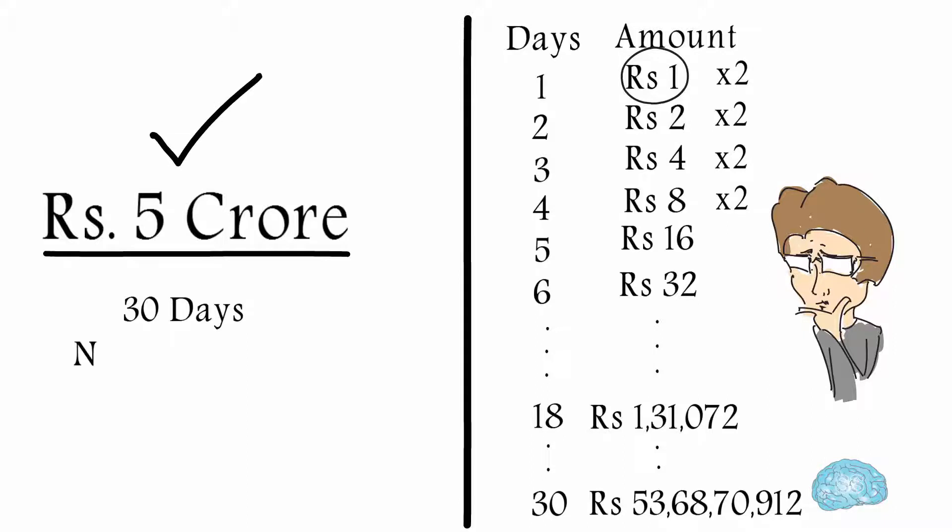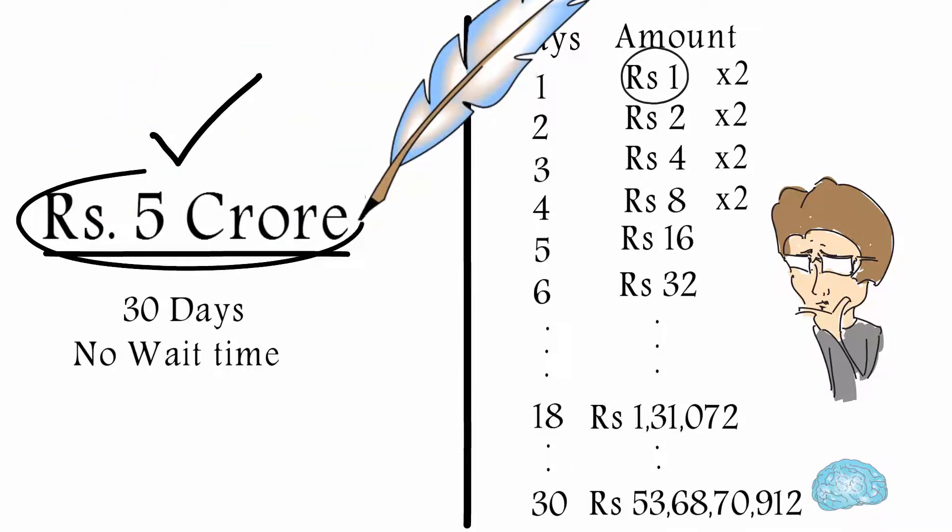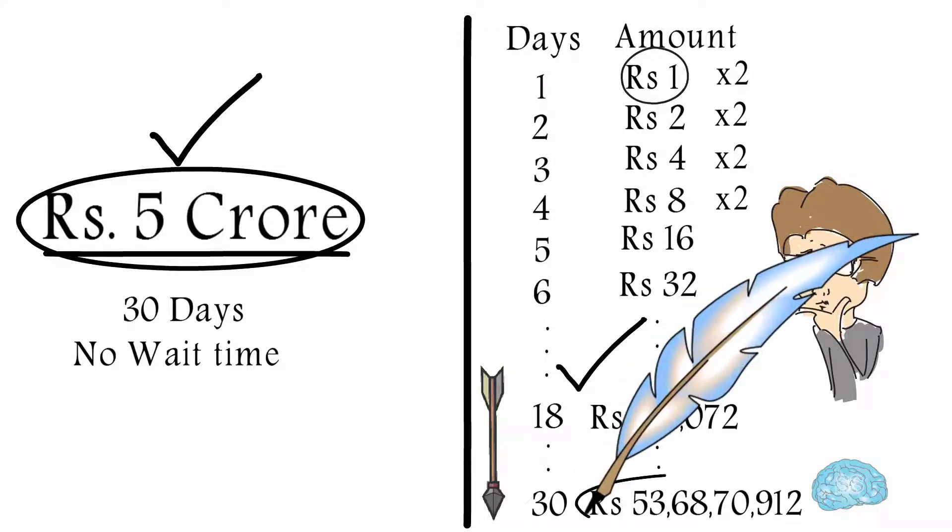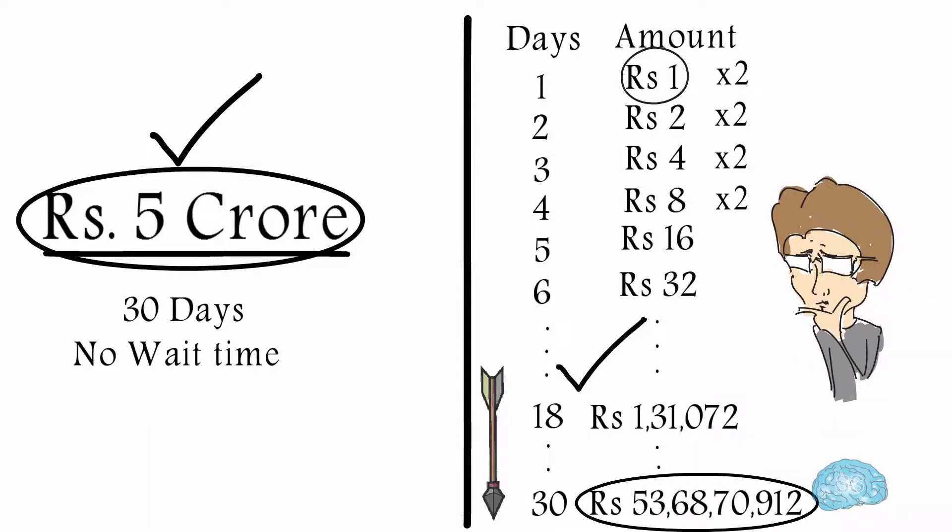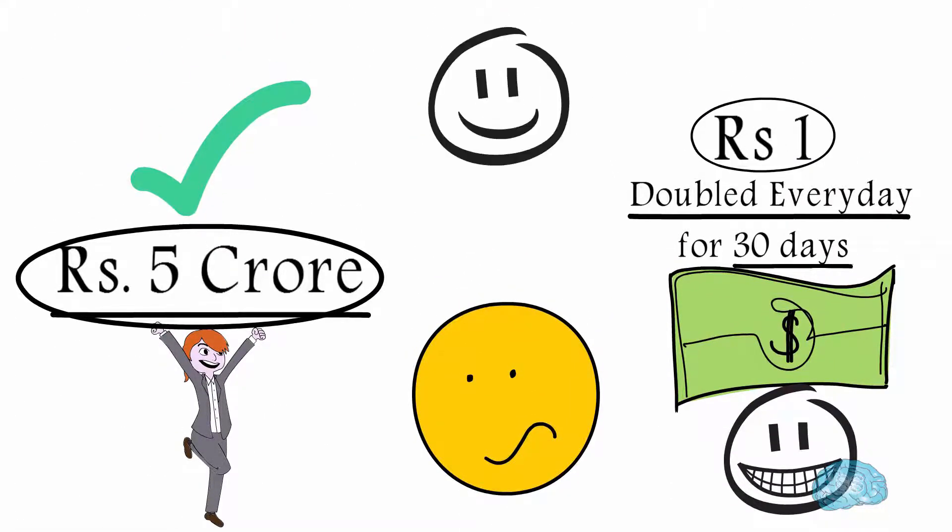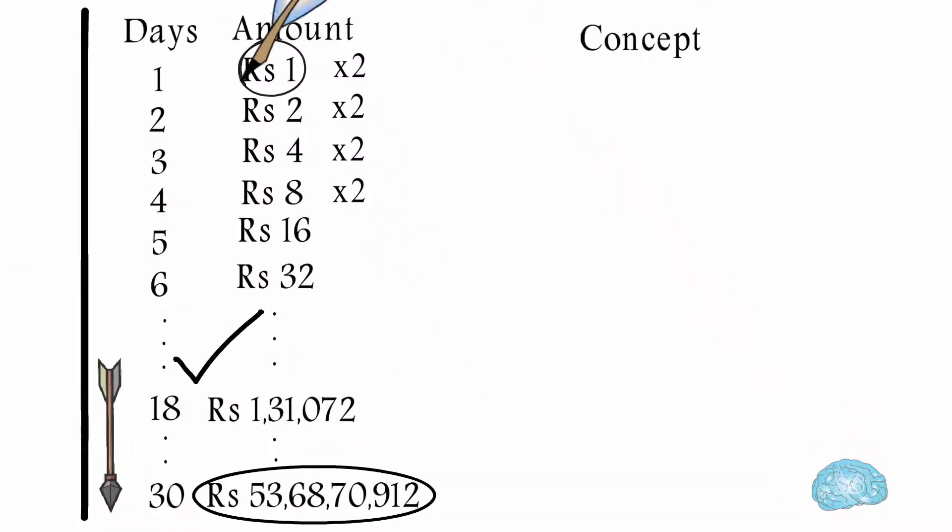So this side, without waiting, you only get 5 crore rupees. But this side, if you wait for 30 days, you could get almost 54 crore rupees. Now if I give you the same offer again, which one will you choose? You will surely go for this option, right? This concept of 1 rupee doubling every day is called compounding.